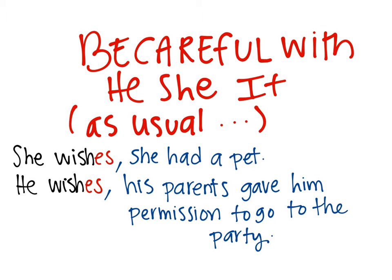Now you have to be careful with he, she, and it — they're all a bit complicated. When we talk about the wishes of somebody else that is not me, you have to write 'she wishes,' not 'she wish.' For example: 'She wishes she had a pet' — ella desearía tener una mascota. 'He wishes his parents gave him permission to go to the party' — él desearía que sus padres le dieran permiso para ir a la fiesta. All of these situations aren't real, that's why we use simple past. Just remember that for he, she, and it, we are going to use 'wishes.'